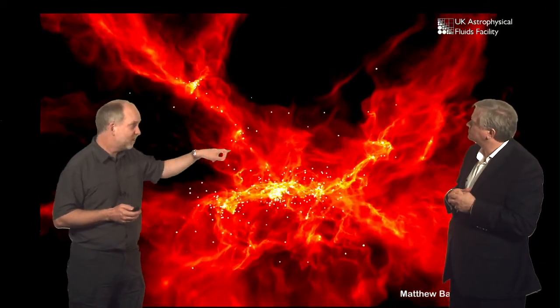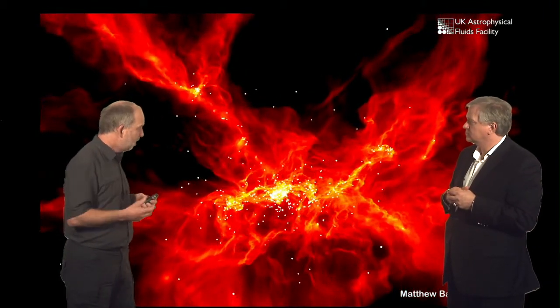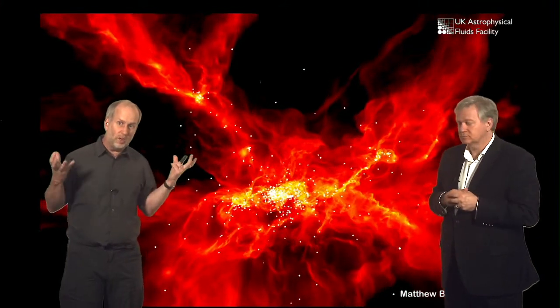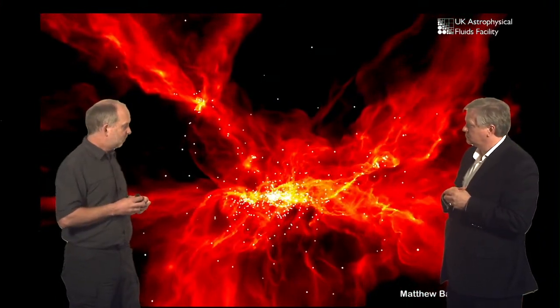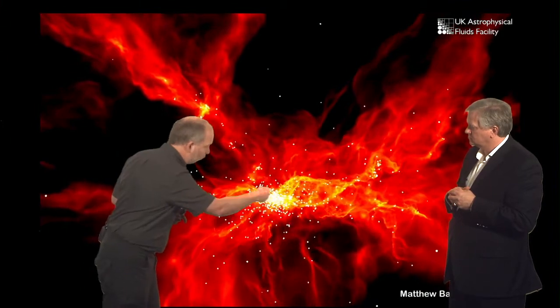So each of these dots probably does have a spinning disk around it, but they're much smaller. The way you get rid of the angular momentum is by having these different dots orbiting around each other.